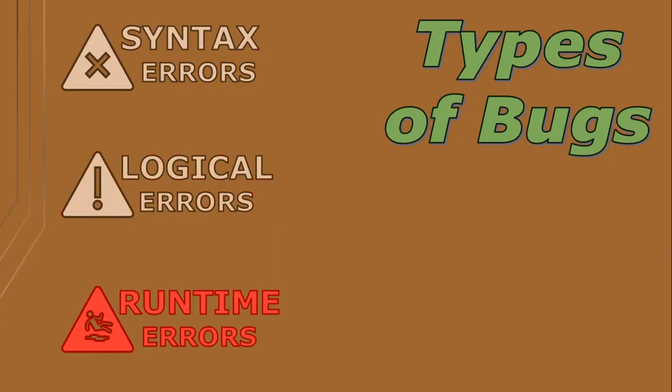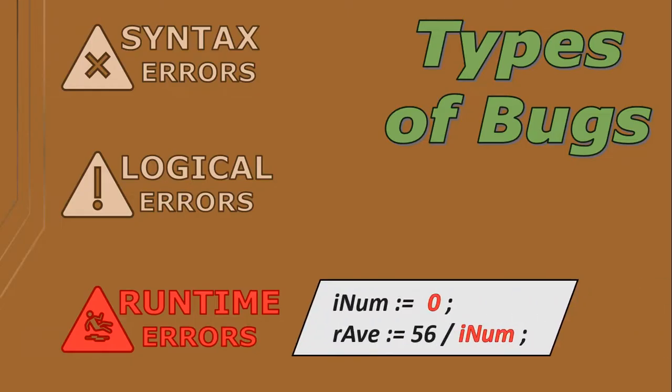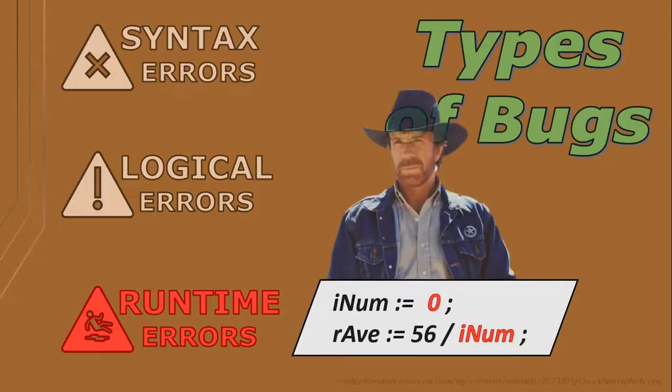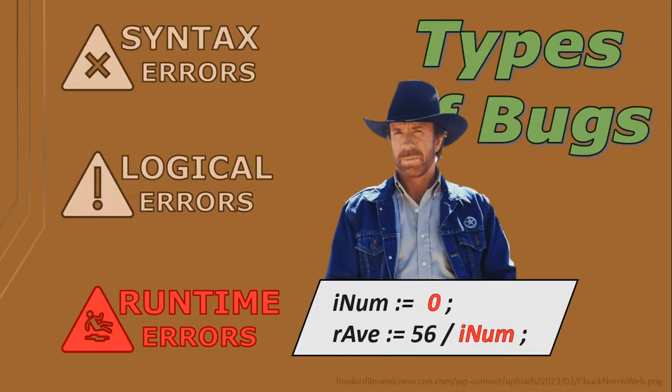Runtime errors are errors that occur during the execution or running of a program, which causes it to crash or time out — such as accessing invalid memory or dividing by zero. And we all know Chuck Norris is the only person that can divide by zero.